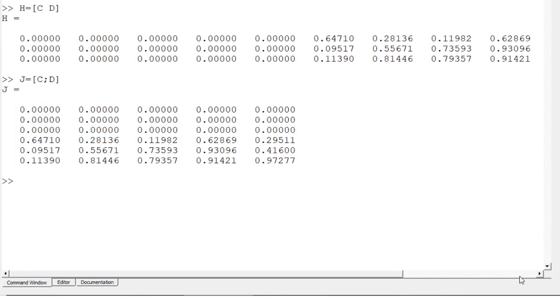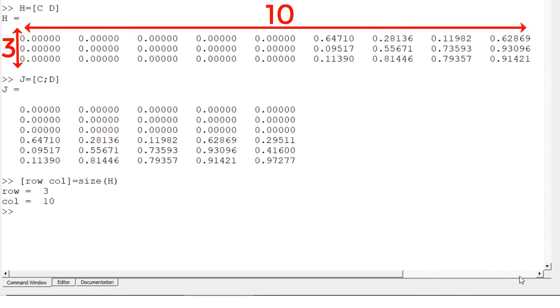You can check the size of matrix using size function. There are two outputs from the size function, one for row size and the other for column size. To save two outputs, I use row and column followed by size H. You can see row size is 3 and column size is 10.